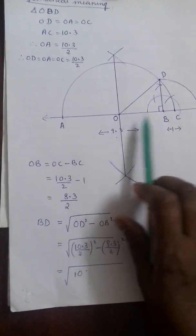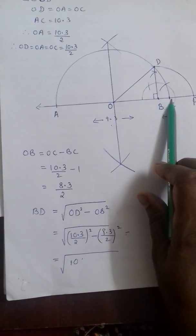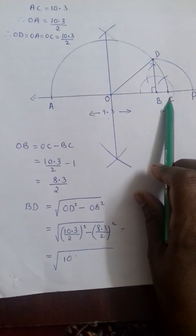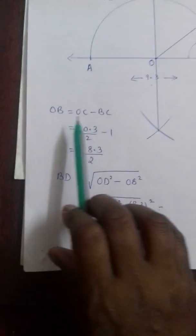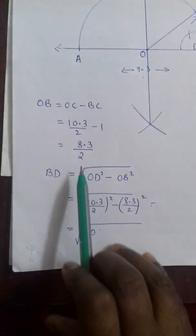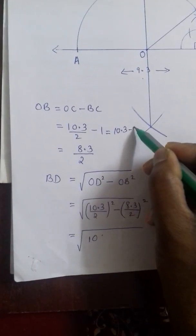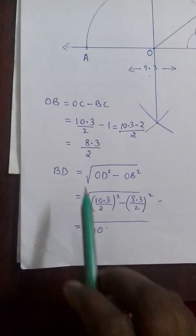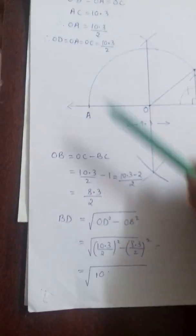Now what is the value of OB? We actually don't know what it is but we know what is the value of OC. OC is 10.3 divided by 2 and BC is 1. So OC minus BC will give you OB. So OB is equal to OC minus BC that is 10.3 by 2 minus 1. By taking LCM you will get 10.3 minus 2 all divided by 2 that is 8.3 by 2. So we have got the value of OD, OA, OC and then OB.